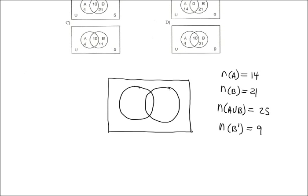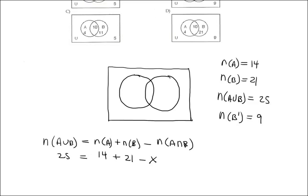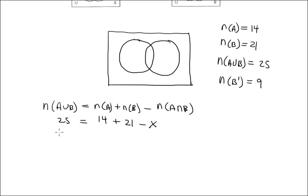Problem 40: given information, determine the rest using the formula |A∪B| = |A| + |B| − |A∩B|. We have |A∪B| = 25, |A| = 14, |B| = 21. So 25 = 14 + 21 − X, which gives 25 = 35 − X, therefore X = 10. The intersection contains 10 elements. Since A has 14 elements and 10 are in common, there are 4 in A only. Since B has 21 and 10 in common, there are 11 in B only.